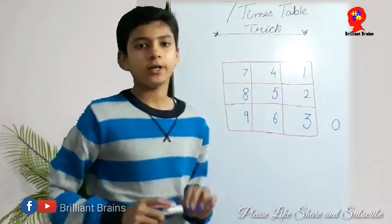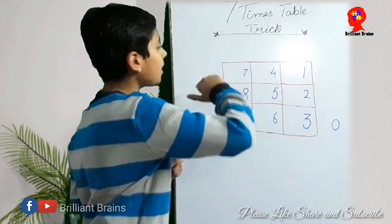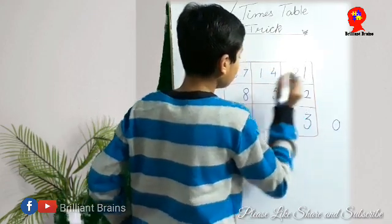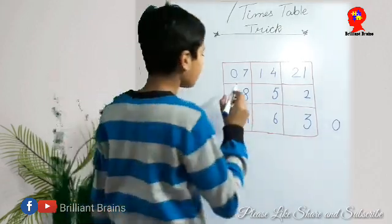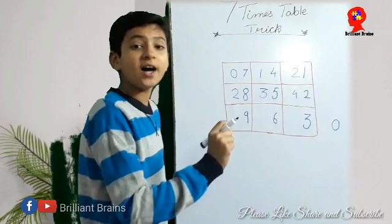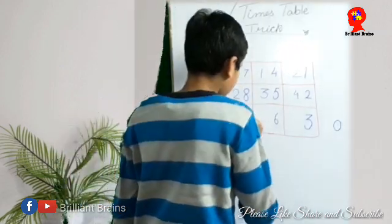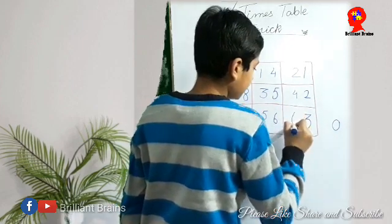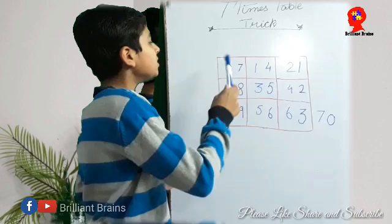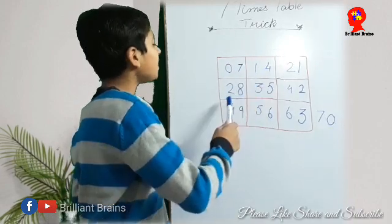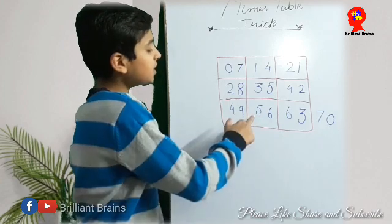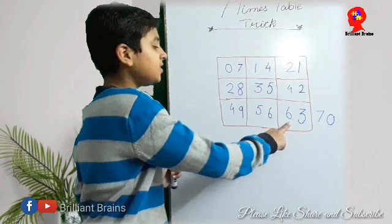Now we have to write the rows. We will start our first row: 0, 1, 2. In the second row we will repeat 2, 3, 4. And finally in the last row we will repeat 4, 5, 6, and 7. Friends, now we will complete the table: 7×1=7, 7×2=14, 7×3=21, 7×4=28, 7×5=35, 7×6=42, 7×7=49, 7×8=56, 7×9=63.